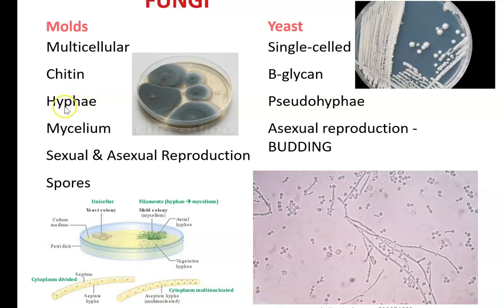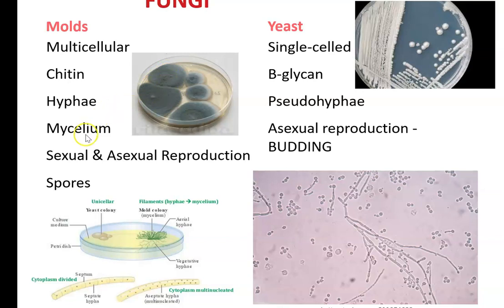Molds have hyphae, and when the little hyphae extensions become that mat growing on your strawberry, orange, bread, or agar plate, that group of hyphae all together that makes it macroscopic is called mycelium. A mold colony is called mycelium, which is made up of hyphae. There are aerial hyphae, which are above the surface of the medium, and vegetative hyphae, which take in nutrients from below the surface.